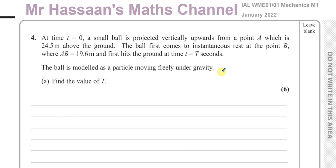Welcome back to Mr. Hassan's Maths channel. This is question number four from the International A-Level Edexcel Mechanics M1 January 2022 exam. This question is about a ball which is projected vertically from a point A at time equals zero, which is 24.5 meters above the ground. The ball first comes to instantaneous rest at point B where AB equals 19.6 meters, and first hits the ground when time t equals capital T seconds. We need to find the value of capital T.